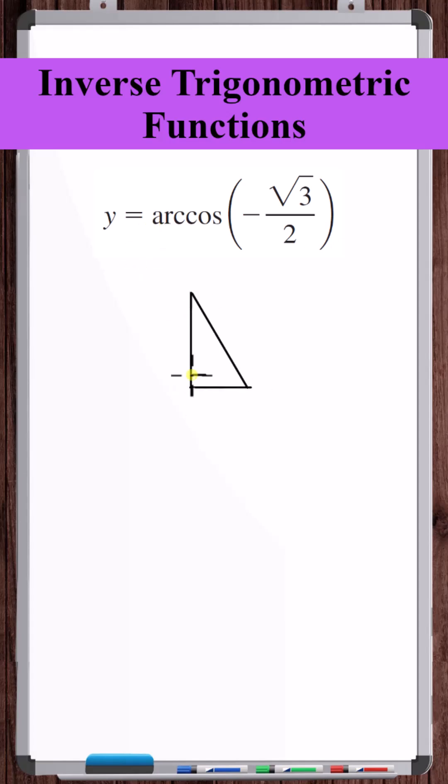Now, if we draw the 30-60-90 reference triangle, we see that the cosine of 30 is root 3 over 2. Therefore, we know that this angle is going to be the angle in the second quadrant with reference angle 30 degrees.